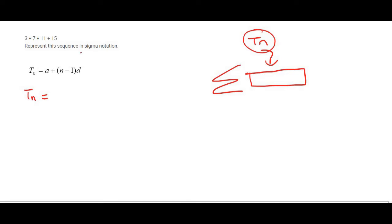So we just say Tn is equal to—now a is obviously always going to be term 1, so that's 3 plus n minus 1, and the common difference is 4.